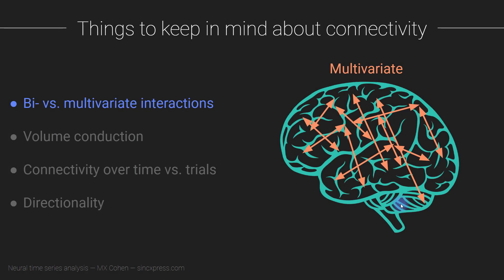In the first lecture of this section, I introduced you to the idea of multivariate versus bivariate synchronization. Multivariate synchronization is what really happens in the brain, where many things are connected to many other things - it's a massive complex multivariate system.